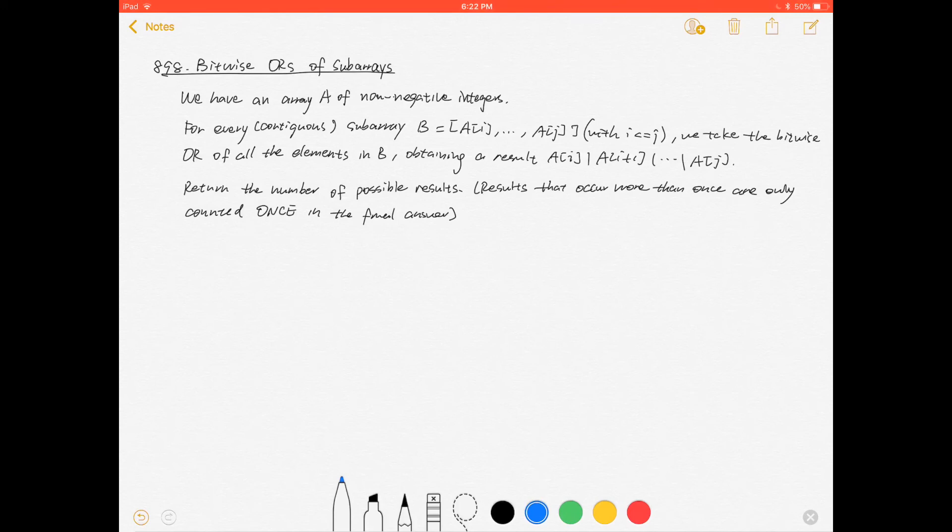Hello everyone, today we're going to talk about problem 898, Bitwise ORs of Subarrays. We have an array A of non-negative integers. For every contiguous subarray B equal to A[i] to A[j] with i less than or equal to j...